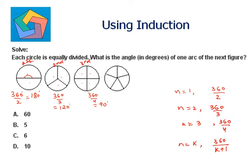So I need to find the angle for the next figure. This is the fourth figure, so I need to determine for the fifth figure. So n equals 5, the angle would be 360 over 5 plus 1. That's 360 by 6, which will be 60 degrees. So A, 60 is the answer.